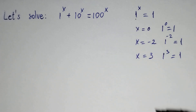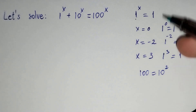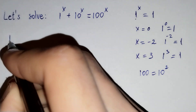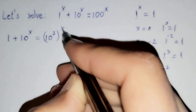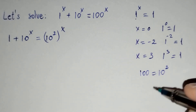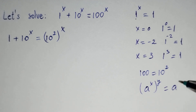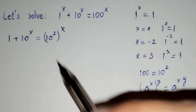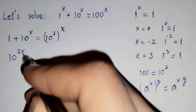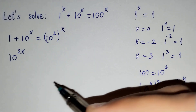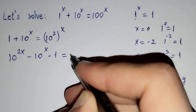We know that 100 equals to 10 power 2. So we can rewrite the equation as: 1 plus 10 power x equals to 10 power 2, power x. We know that a power x, brackets, power y equals to a power x times y. So 10 power 2, brackets, power x equals to 10 power 2x. Moving terms, we get: minus 10 power x minus 1 equals to 0.